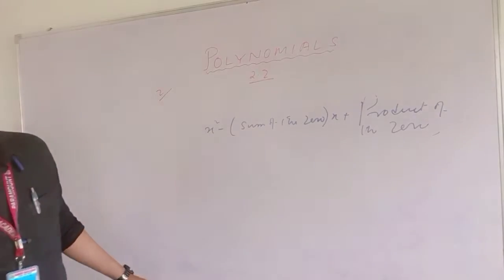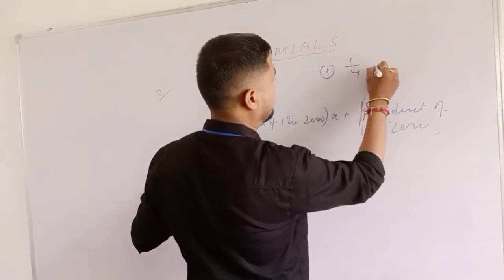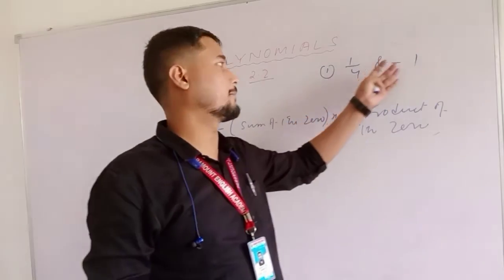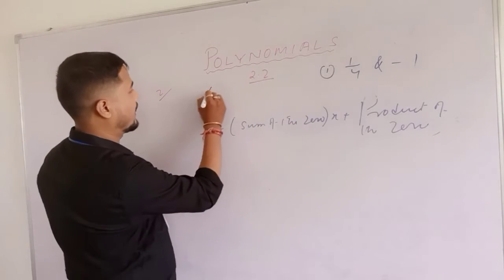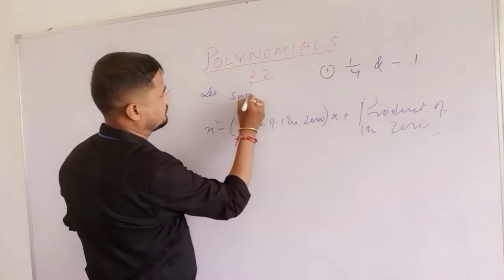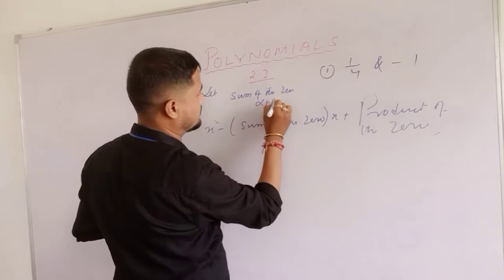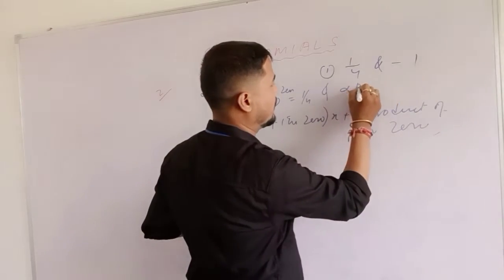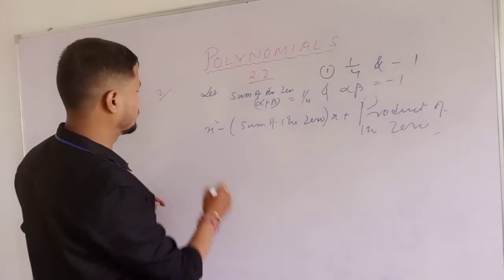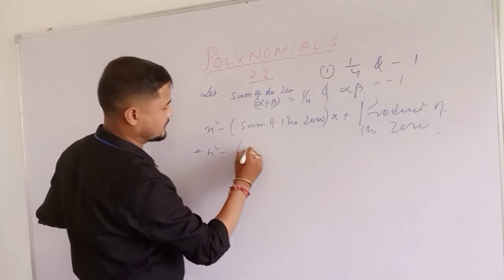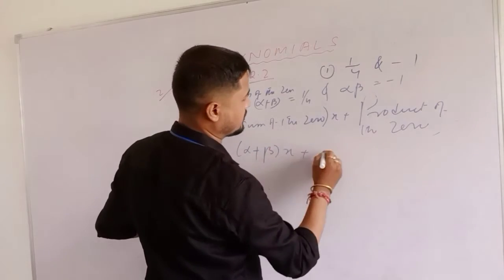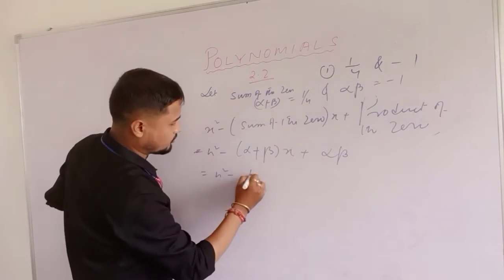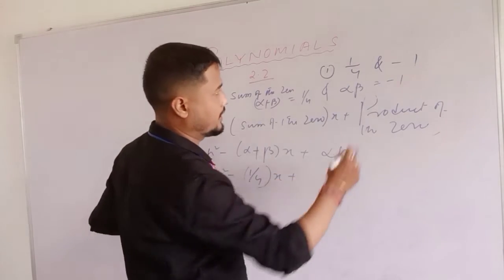Question number two: the sum is one by four and the product is minus one. That means sum of the zeros, alpha plus beta, equals one by four, and product of the zeros, alpha times beta, equals minus one. So we write: x squared minus one by four into x plus minus one.